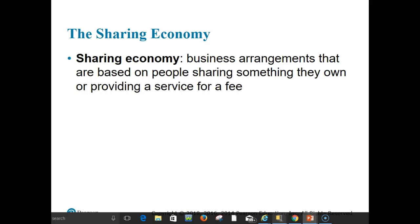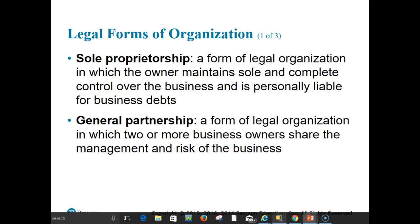The first business organizing decision an entrepreneur must make is the form of legal ownership for the venture. The two primary factors affecting this decision are taxes and legal liability. The right choice can protect the entrepreneur from legal liability and save tax dollars in both the short and long run. The three basic ways to organize are sole proprietorship, partnership, and corporation — but including variations, there are six possible choices, each with its own tax consequences, liability issues, and pros and cons.